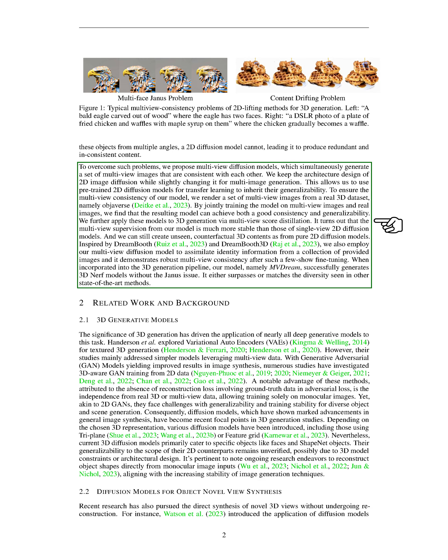To address these issues, we propose multi-view diffusion models. These models generate a set of images from multiple viewpoints that are consistent with each other. We maintain the architecture design of 2D image diffusion but modify it slightly for multi-image generation. This allows us to use pre-trained 2D diffusion models for transfer learning to inherit their generalizability. To ensure the consistency of our model, we render a set of multi-view images from a real 3D dataset called Objaverse. By training the model on both multi-view images and real images, we find that the resulting model can achieve both good consistency and generalizability.